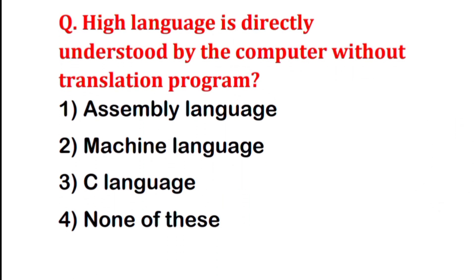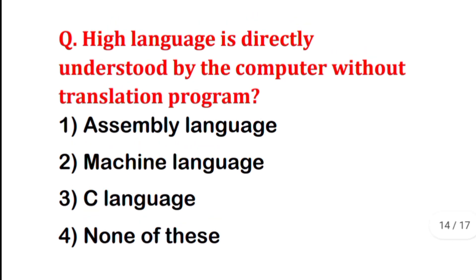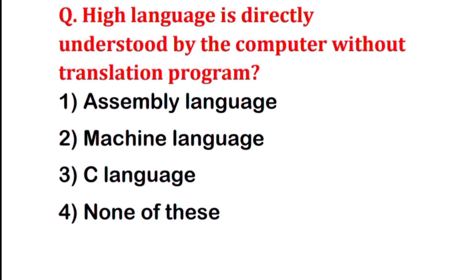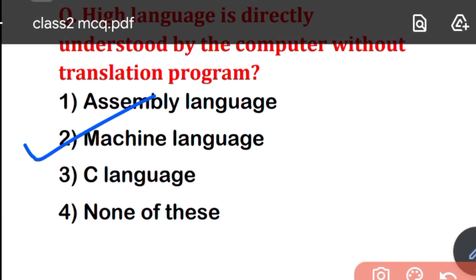High level language is directly understood by the computer without translation programs — so which language is that? The correct answer is Machine Language. Machine language is directly understood by the computer without a translation program.